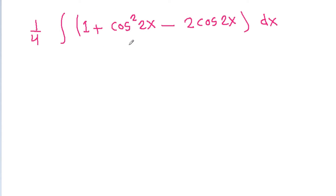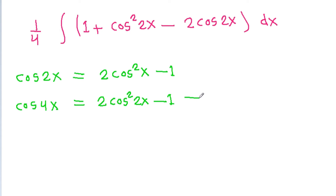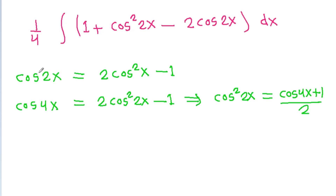We know that cos 2x equals 2 cos²x minus 1. From this identity, cos 4x equals 2 cos²2x minus 1. Rearranging, we get cos²2x equals (1 + cos 4x) / 2.